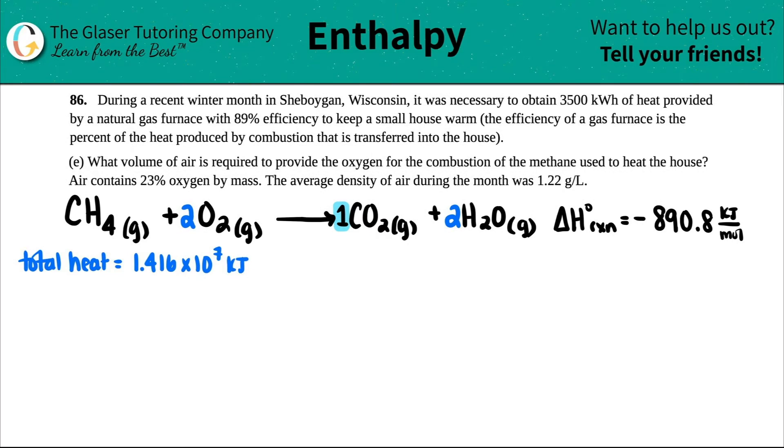Number 86. During a recent winter month in Sheboygan, Wisconsin, it was necessary to obtain 3,500 kilowatt hours of heat provided by a natural gas furnace with 89% efficiency to keep a small house warm. The efficiency of a gas furnace is the percent of the heat produced by combustion that is transferred into the house.